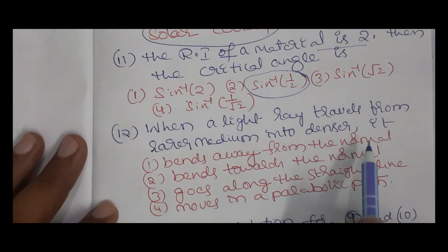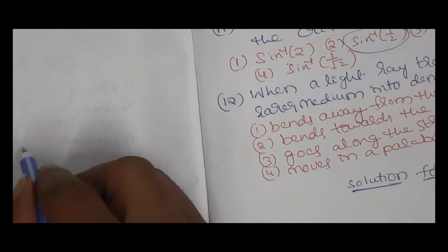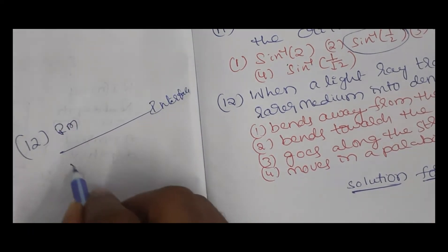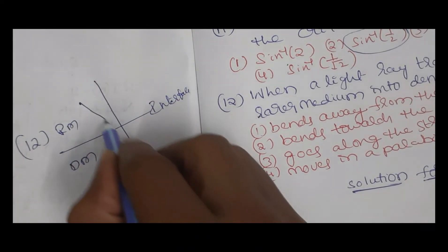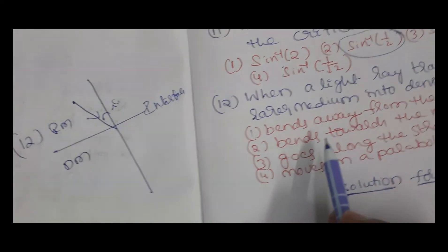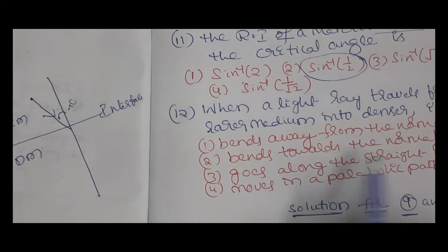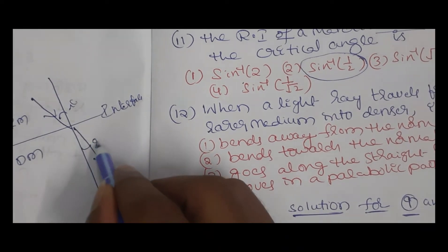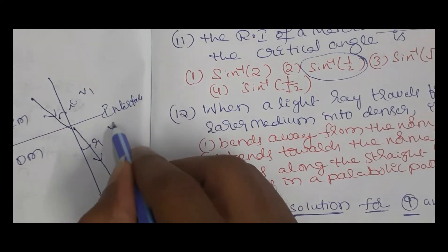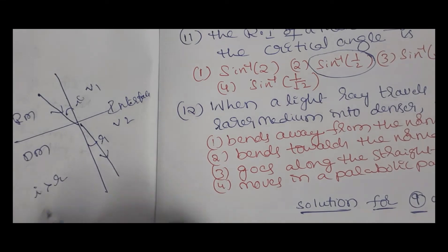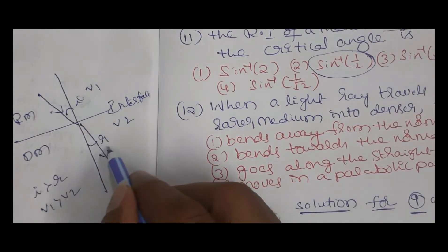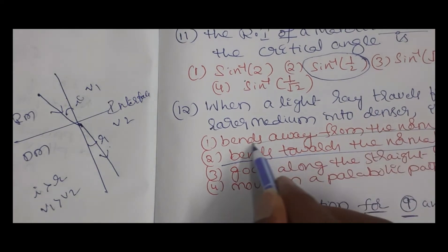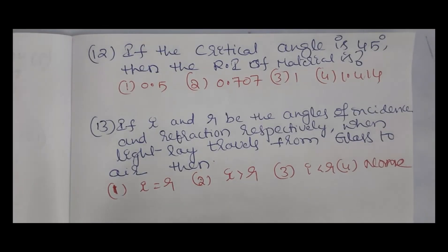Question 12: when light travels from a rarer medium into a denser medium, it bends towards the normal. At the interface, the incident ray bends towards the normal due to a decrease in speed. The angle of incidence i is greater than the angle of refraction r, and v1 > v2. As the speed decreases, the ray bends towards the normal.